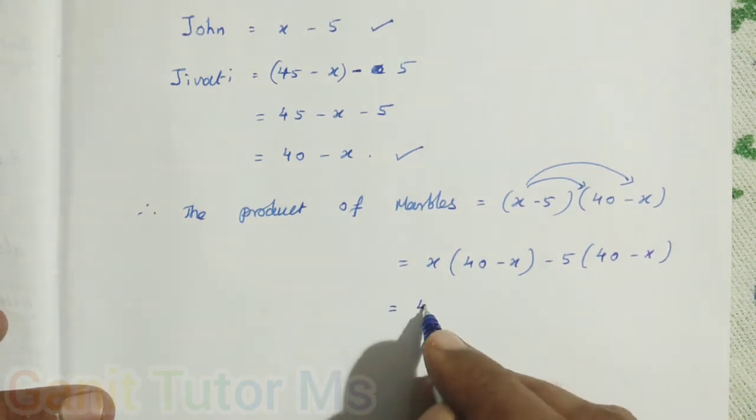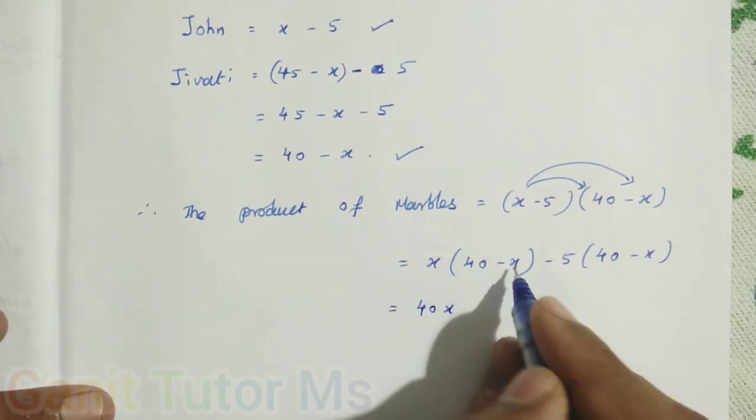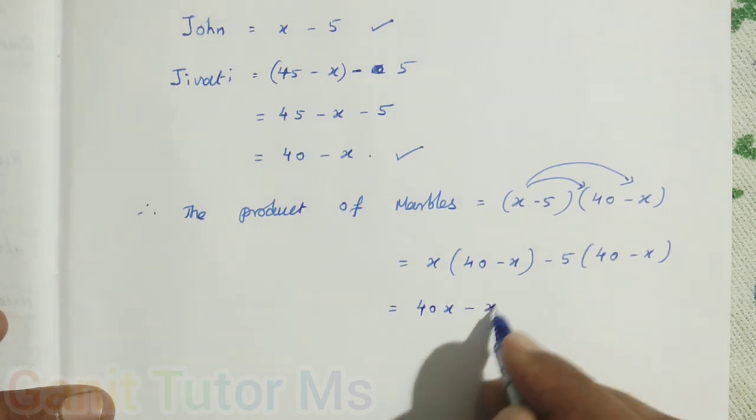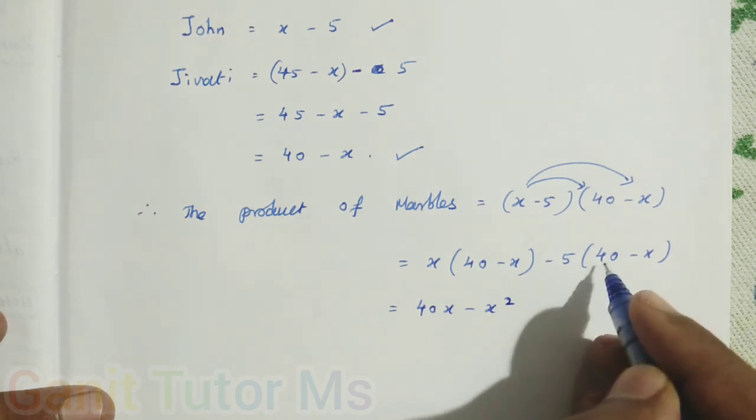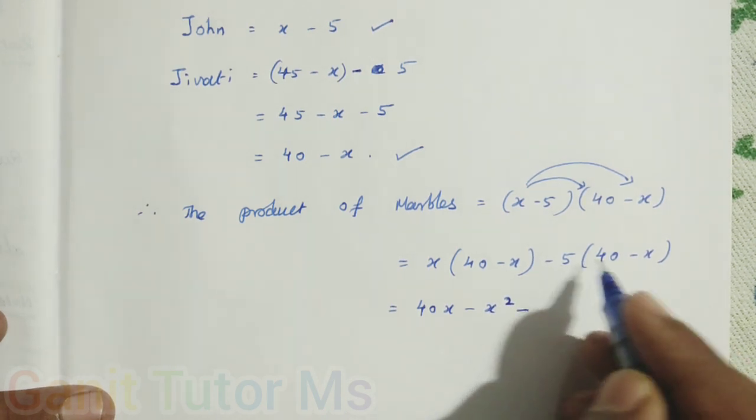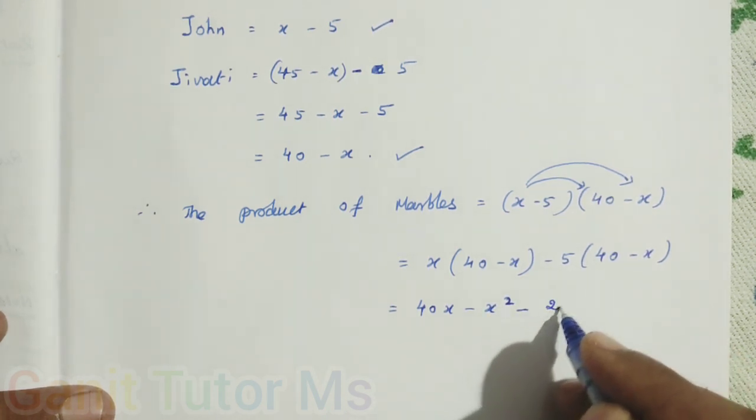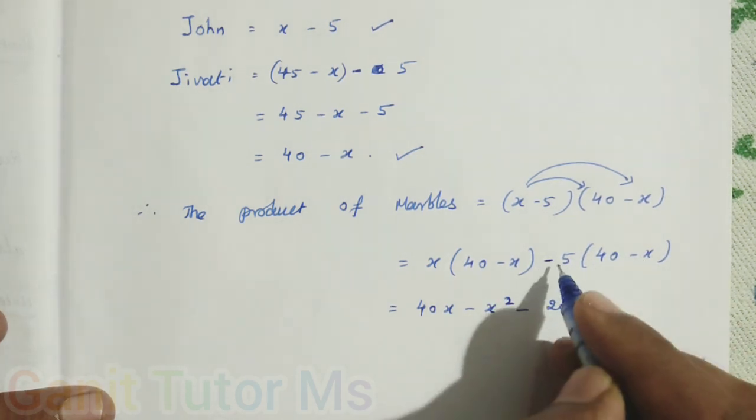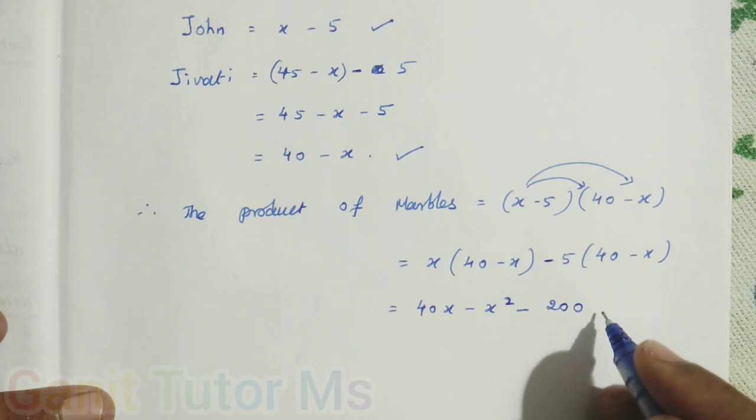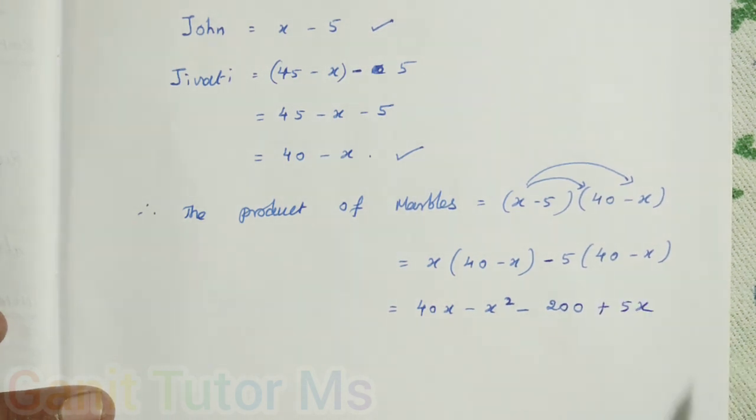Next term: x into 40, 40x. x into minus x, minus x squared. Please be careful in the sign. Next step: minus 5 into 40, so plus into minus is minus. 5 forties are 20, so 200. Then here minus, here also minus x, so minus 5 into minus x, plus 5x.